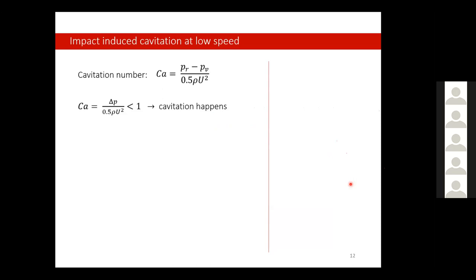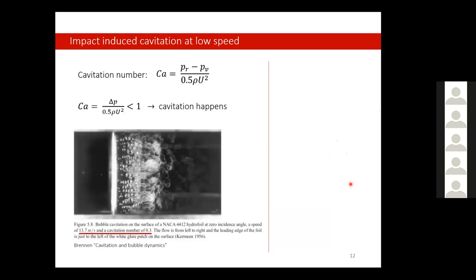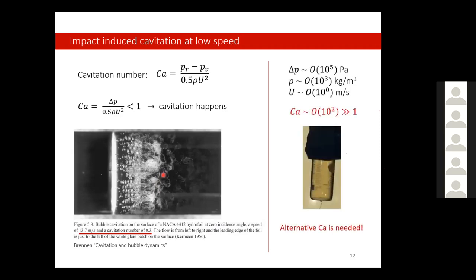Let's see if the classic theory can predict this weird phenomenon. The classic theory says if the flow goes too fast and the cavitation number is smaller than one, we expect cavitation. For example, a cavitation number of 0.3 — we see bubbles, very simple. But if we plug in our observed numbers, the speed of the flow is always very small, less than one meter per second. Based on classical theory, we calculate the cavitation number is much larger than one, meaning no cavitation. The classical theory fails, and we need a new cavitation number to predict cavitation onset.